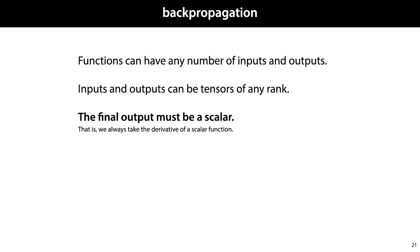Functions can have any number of inputs and outputs. Inputs and outputs can be tensors of any rank. And, crucially, the final output must be a scalar. That is, we always take the derivative of a scalar function. It can have multiple inputs, all of which can be tensors, but it can have only one output, which is a scalar.